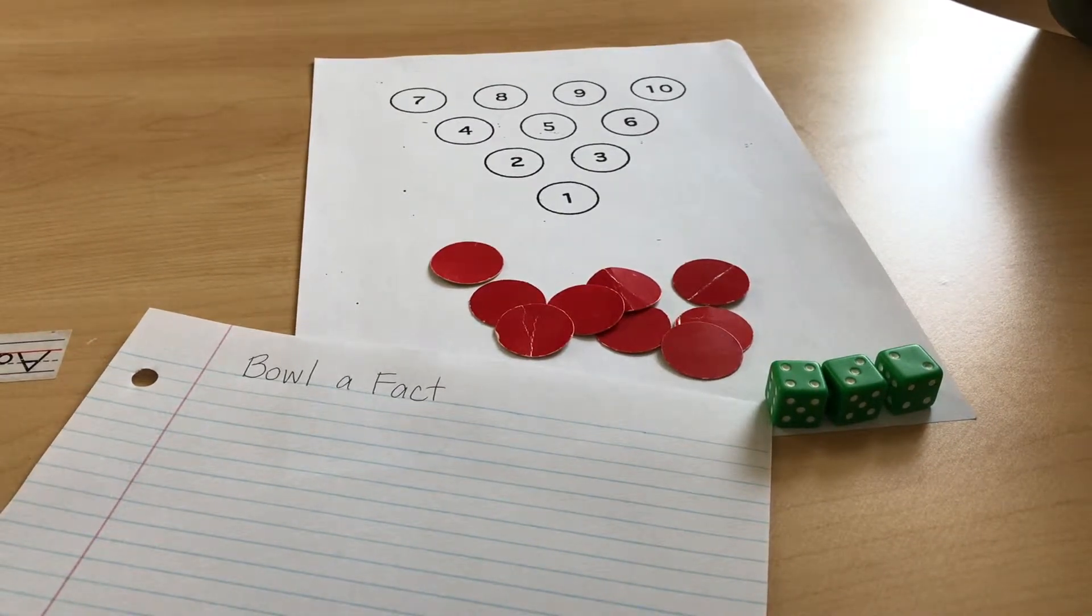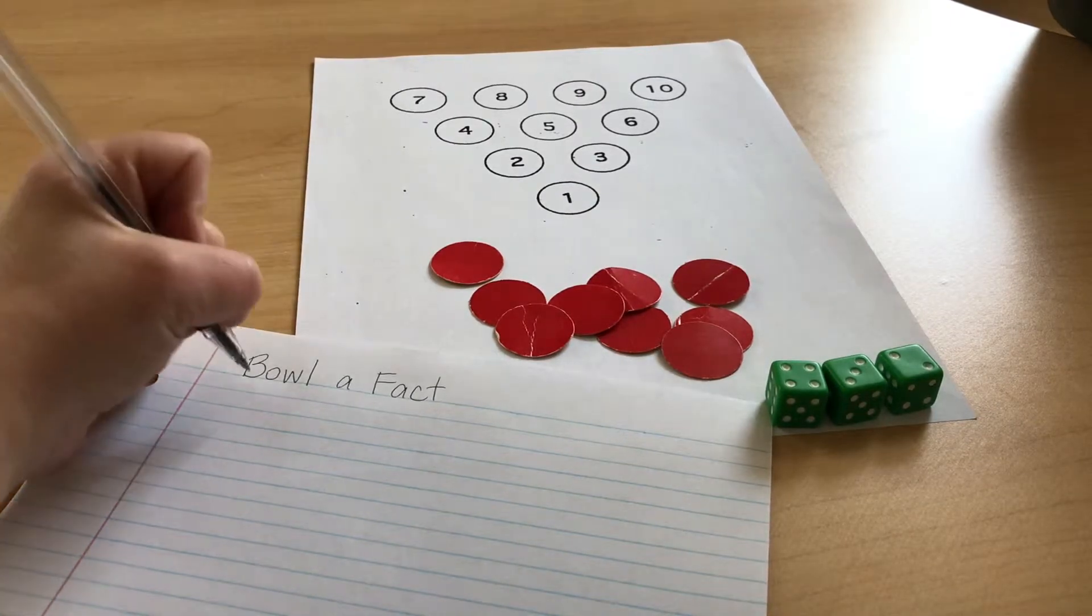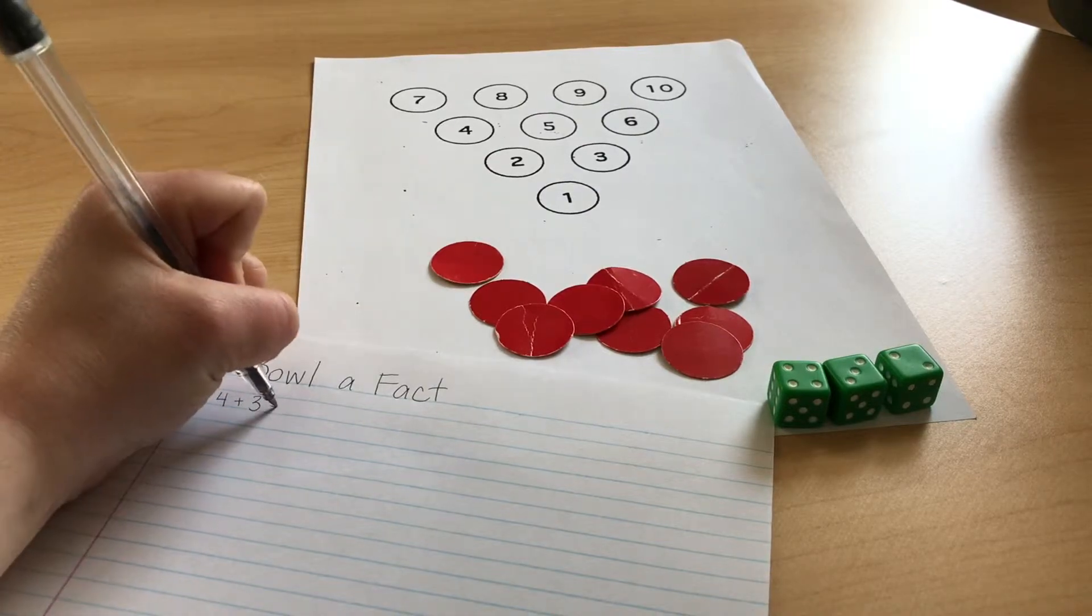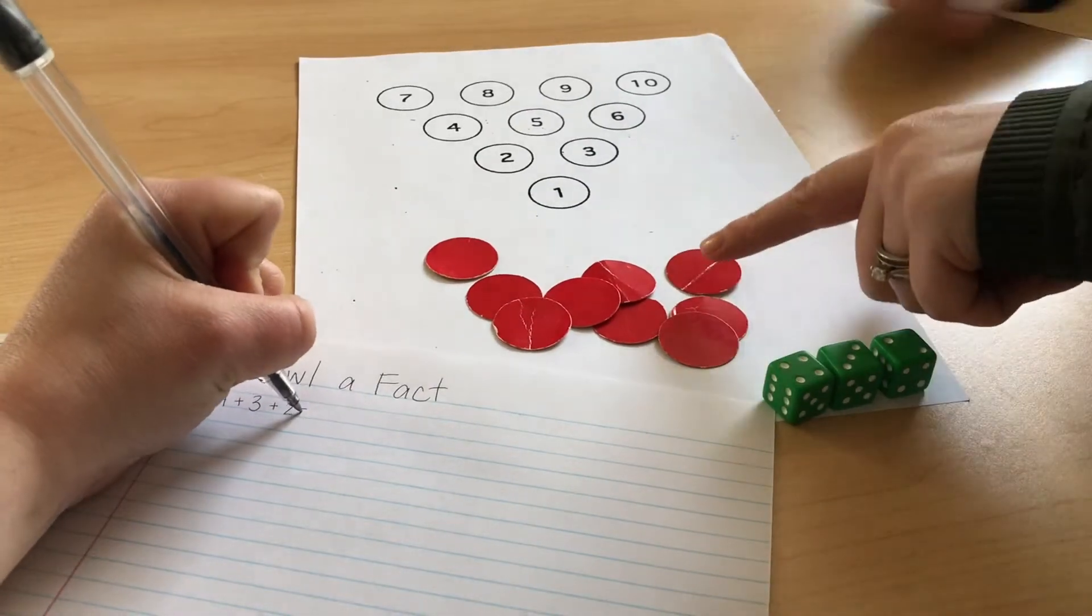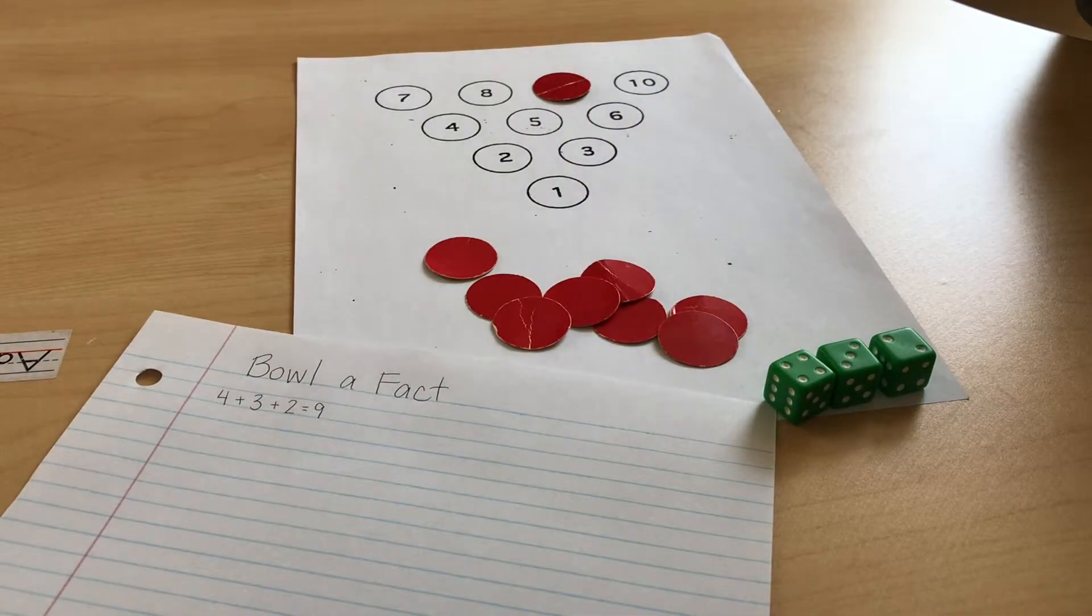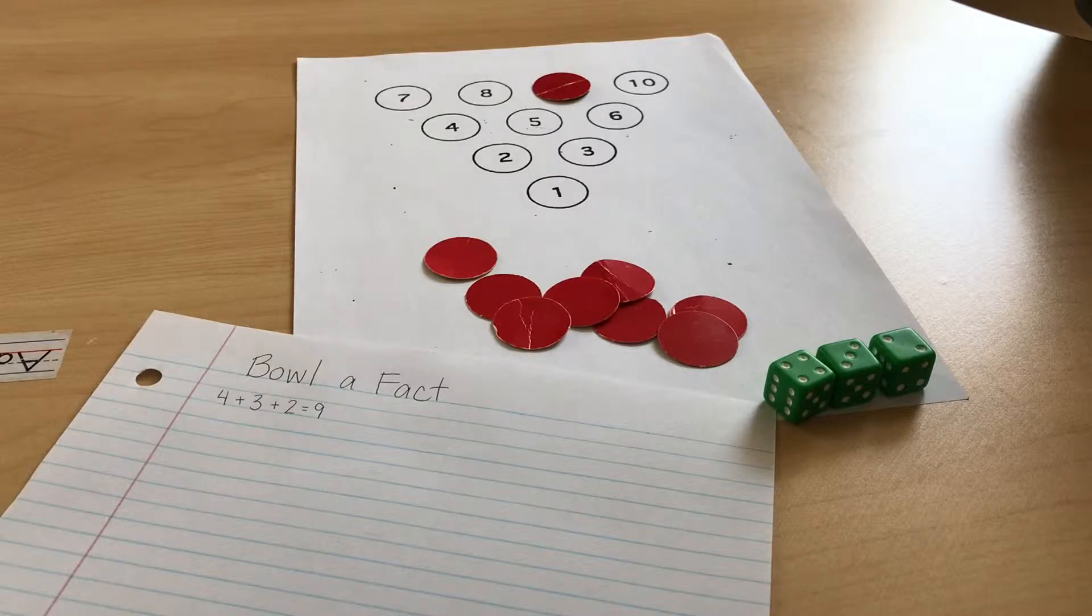We're going to use adding and subtracting or multiplying and dividing in any combination to get the numbers. But let's just start with adding and subtracting. So four plus three is seven, plus two more would be nine. We're going to write this down as we go along so we have proof of how we got those numbers.